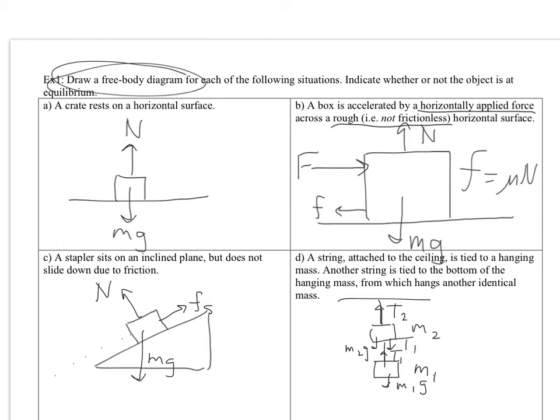Remember, tension goes both directions in a string or rope, right? It's going to pull up on the bottom object, but down on the top one. If you're thinking, Mr. Erico, isn't T1 equal to M1G? Yes, it is true. They are equal in magnitude.